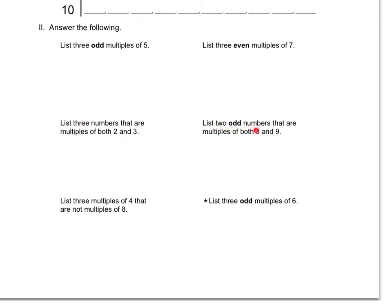Here, list 3 numbers that are multiples of both 2 and 3. List 2 odd numbers that are multiples of both 3 and 9. List 3 multiples of 4 that are not multiples of 8. And this one has a star. It says list 3 odd multiples of 6. So pay attention to that star. It might mean something.